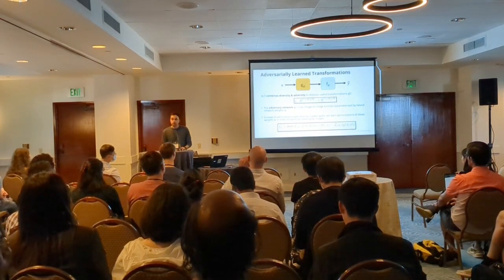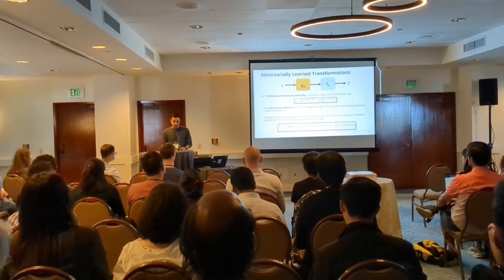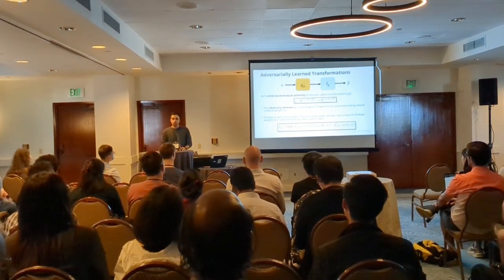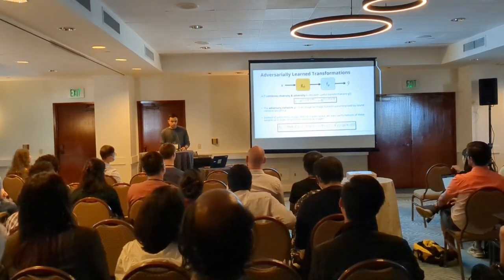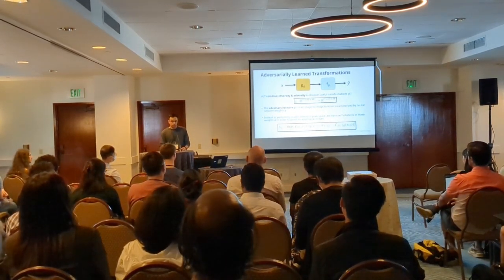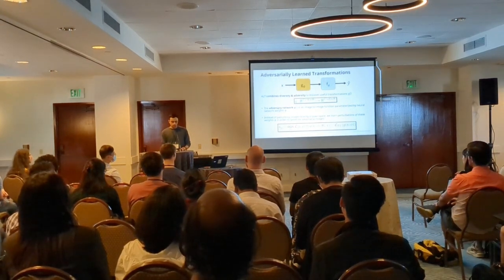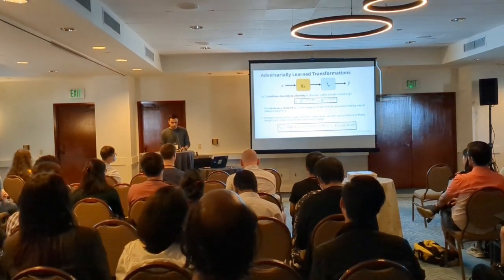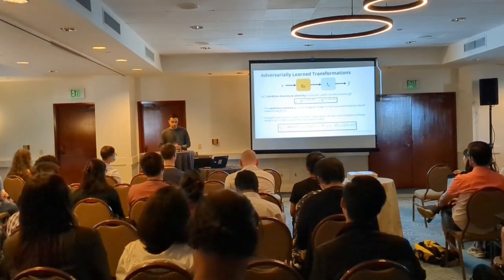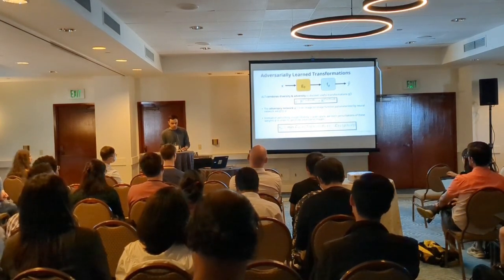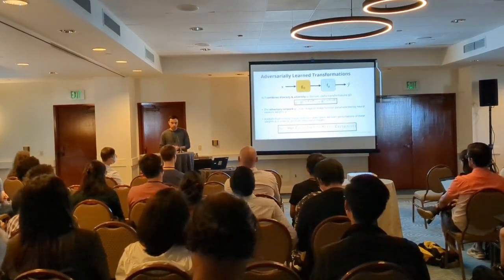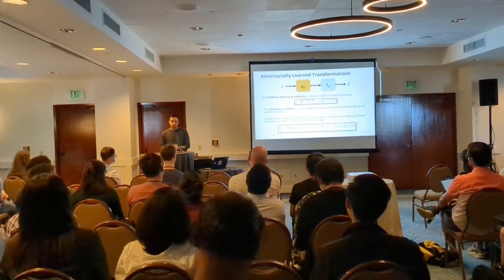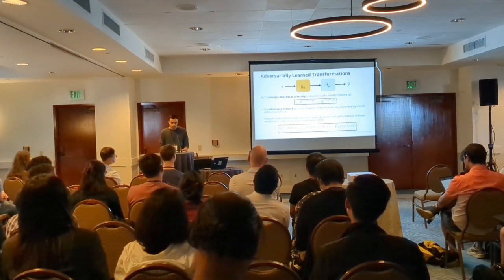ALT uses an adversary network that is trained to create plausible image transformations that can fool the classifier. And instead of learning these perturbations in pixel space, ALT learns these perturbations in the weight space of the neural network — perturbations of phi — to generate images that maximize classifier loss. These images are then used as augmented data on which the model must learn.